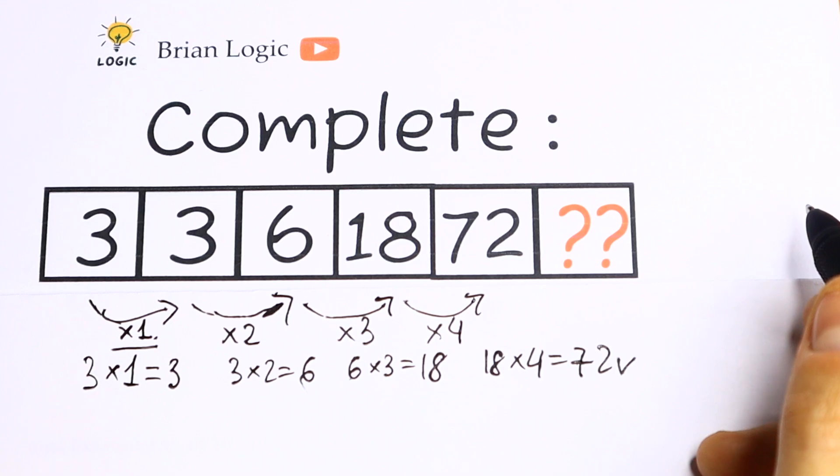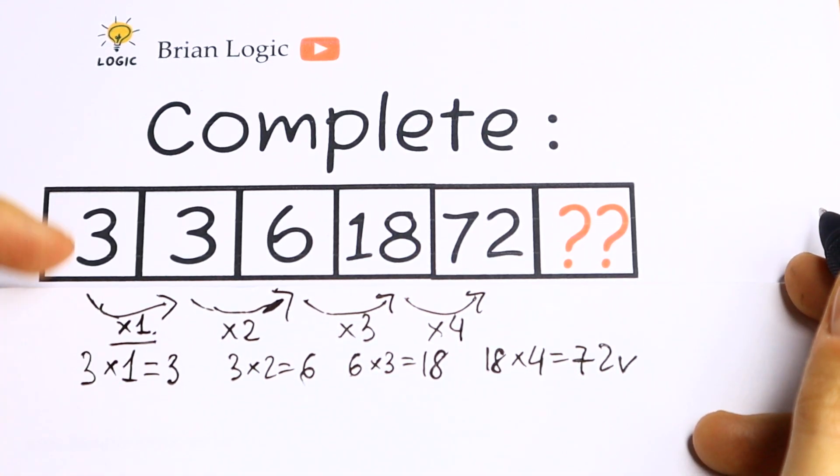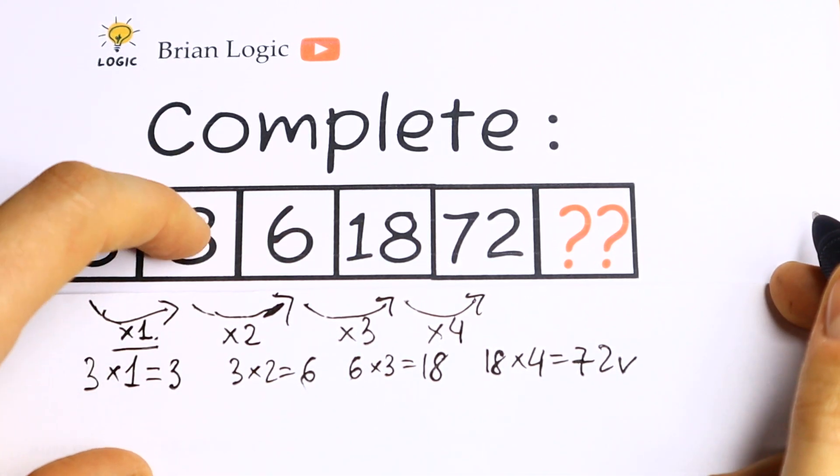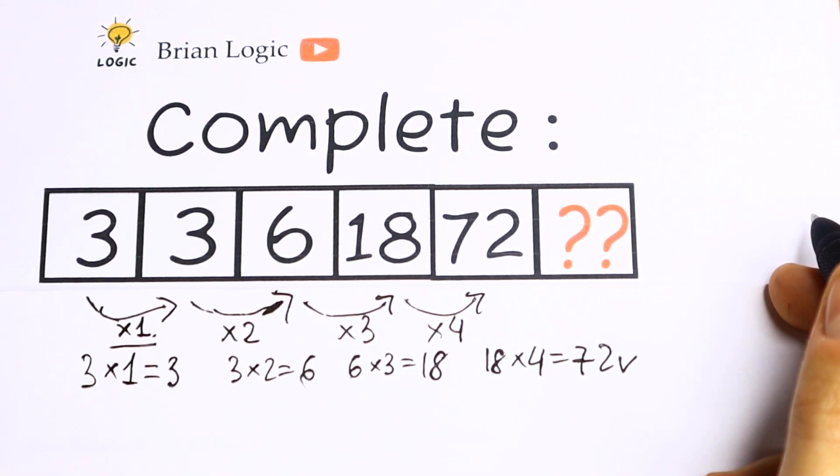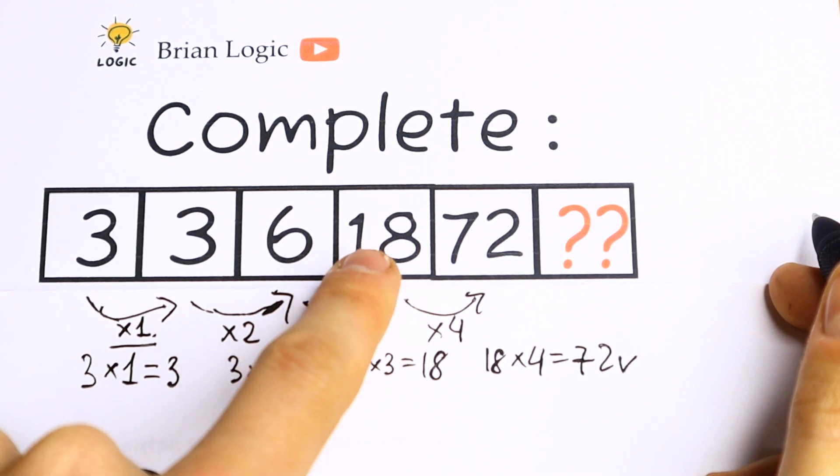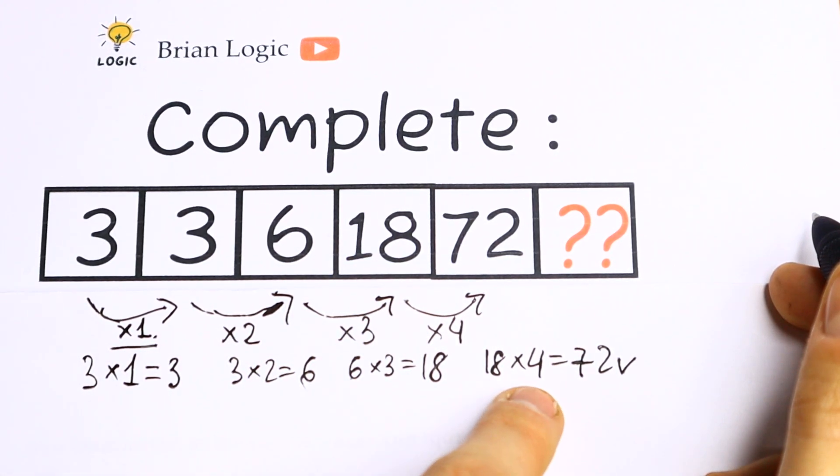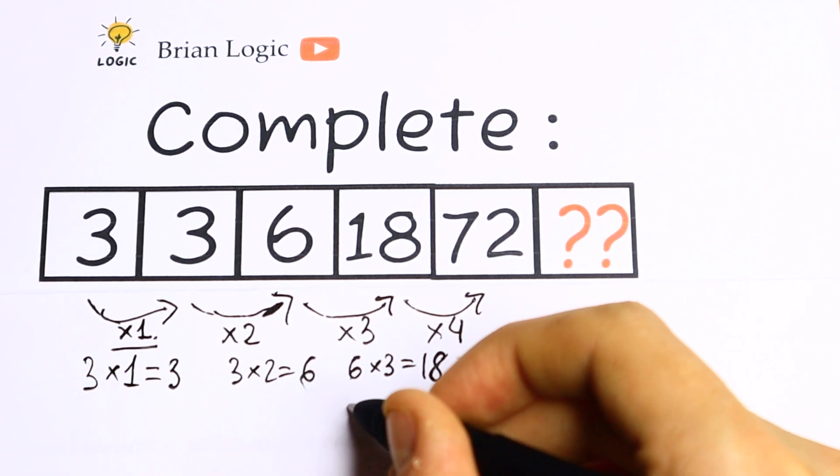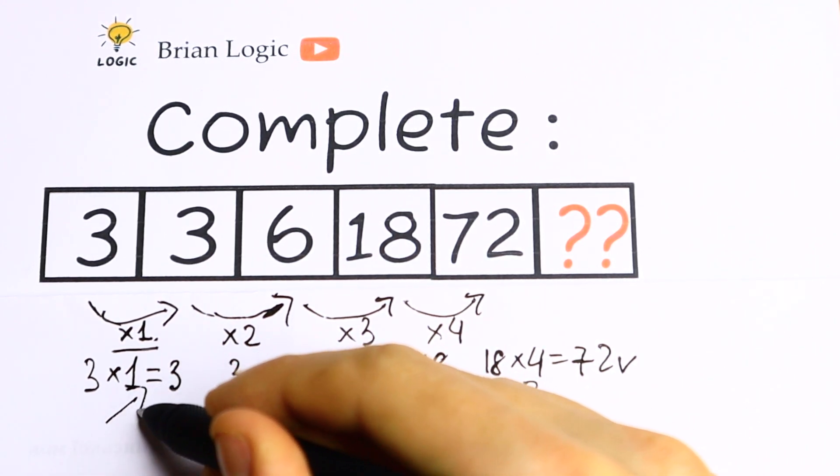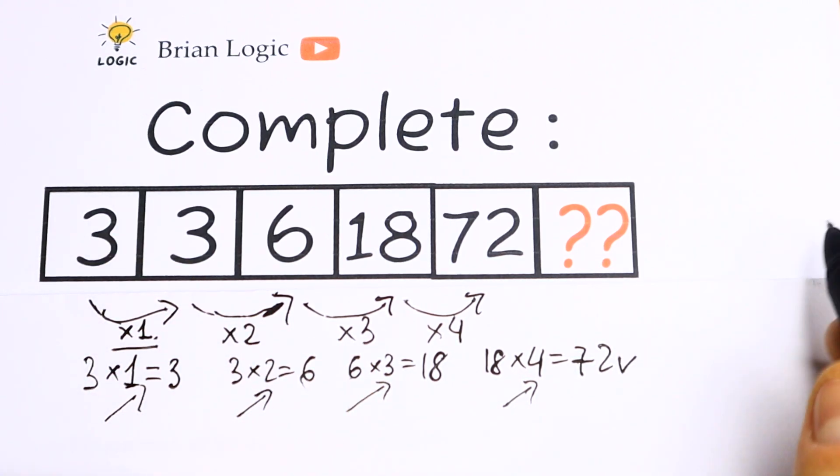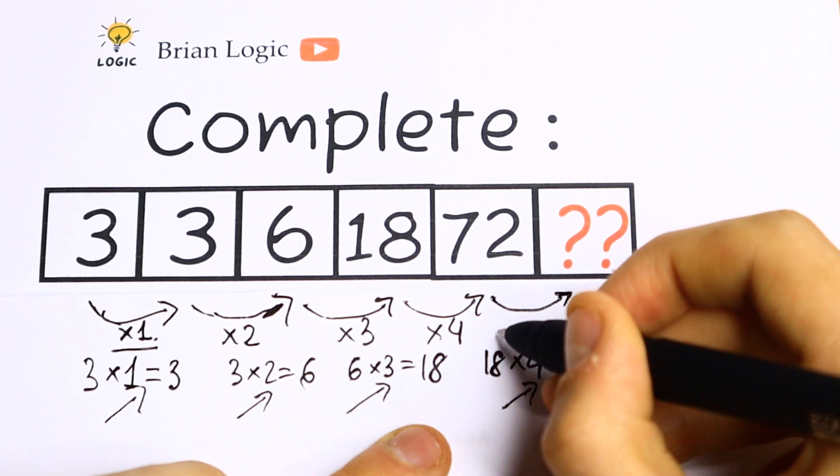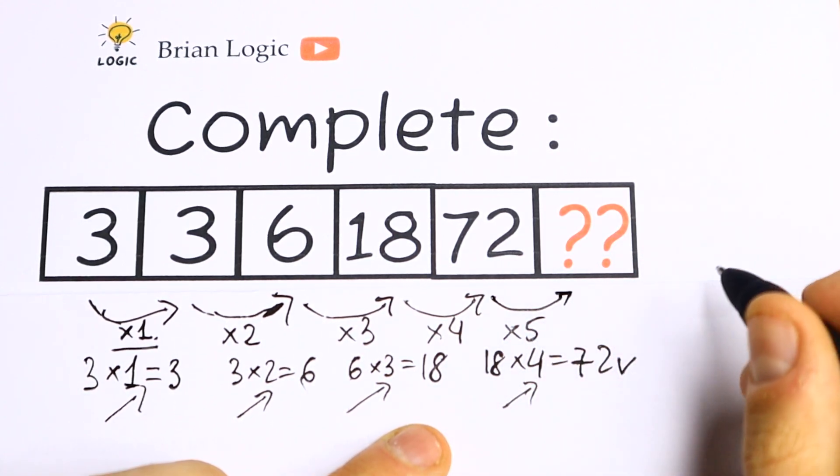The pattern between all these numbers: we multiply the previous number by 1 to get the next one, then by 2 to get the third one, by 3, by 4. As you can see, we have an order: 1, 2, 3, 4. So we need to multiply the fifth number by 5 to get the last number.